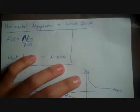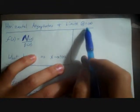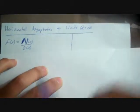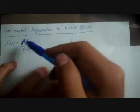Today I'm going to teach you about horizontal asymptotes and limits at infinity. The general function we'll base our rules on is f(x) = N(x) / D(x) — a rational function. Horizontal asymptotes and limits at infinity only exist in rational functions. When we say limits at infinity, we mean what happens to the function as x approaches positive or negative infinity.